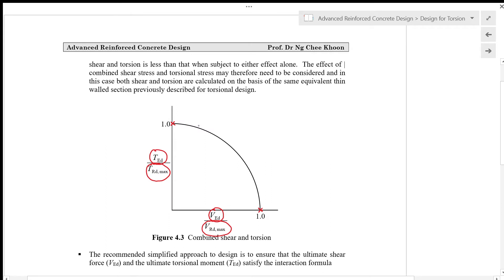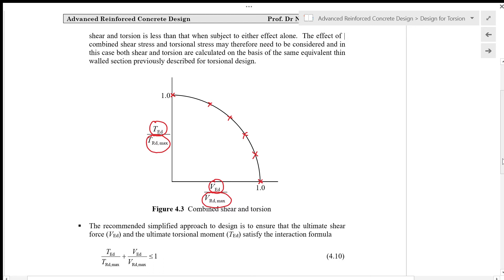When shear and torsion act interactively, we have the interaction diagram for torsion and shear. The recommended simplified approach to design is to ensure that the ultimate shear force VED and the ultimate torsional moment TED satisfy the interaction formula: TED/TRD max + VED/VRD max ≤ 1, which is equation 4.10.